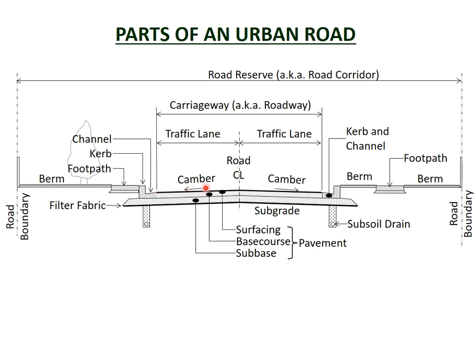The part of the road where the traffic flows is called the carriageway, also known as the roadway. The surface of the carriageway usually has a watertight layer known as the surfacing, which may also be called the wearing course or the top course. The surfacing provides a safe surface for vehicles and prevents water from entering the underlying layers. The most common types of surfacing in New Zealand are chip seal and asphalt concrete.